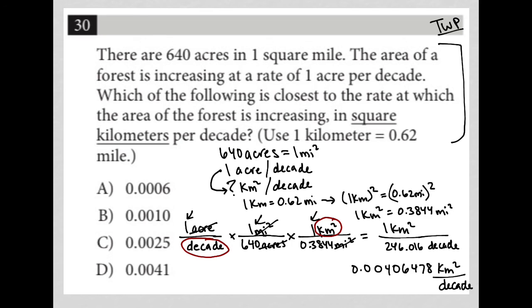The question asks us for which one is closest to the rate. I look at my answer choices, and this value here is closest to 0.0041. Therefore, the correct answer here is choice D.